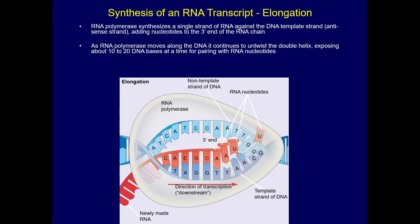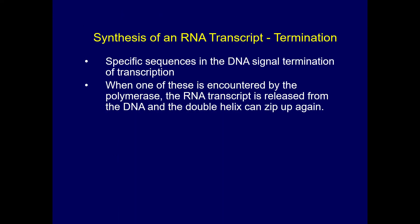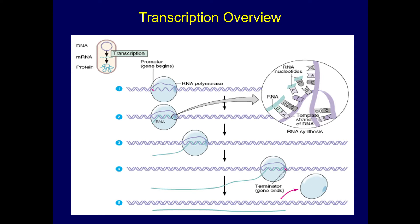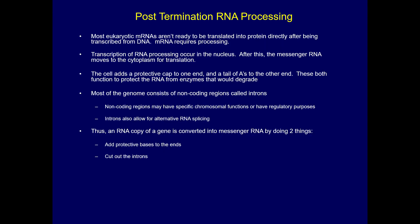During elongation, only one single strand is being created — we don't make two strands at a time. The double helix is exposed but only one side is used to make the RNA. At the end, a specific sequence signals that synthesis should stop, the entire RNA transcript is ready, and the DNA zips back up again.